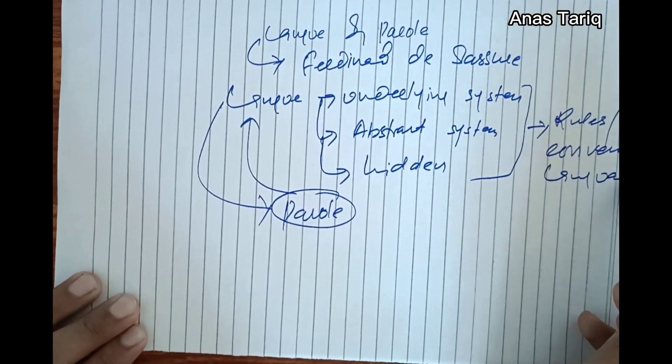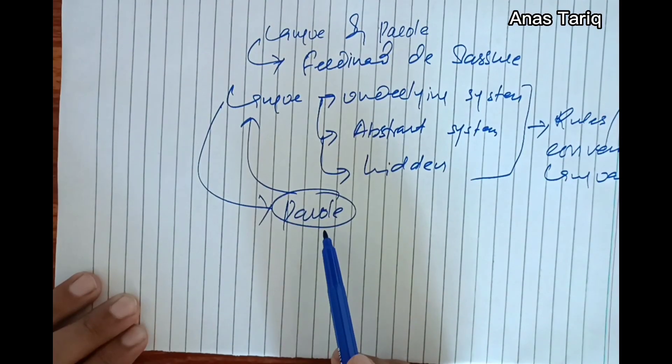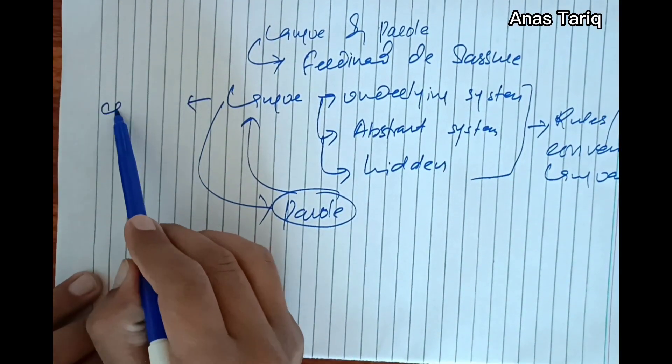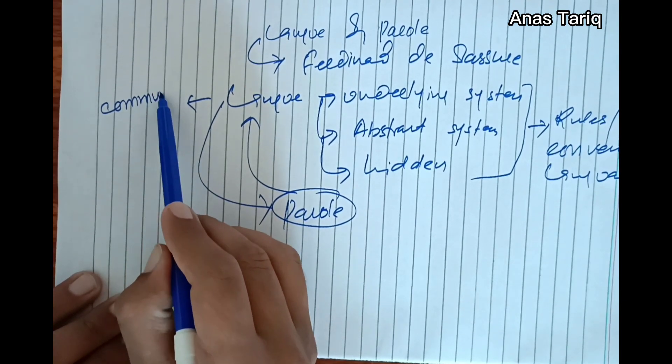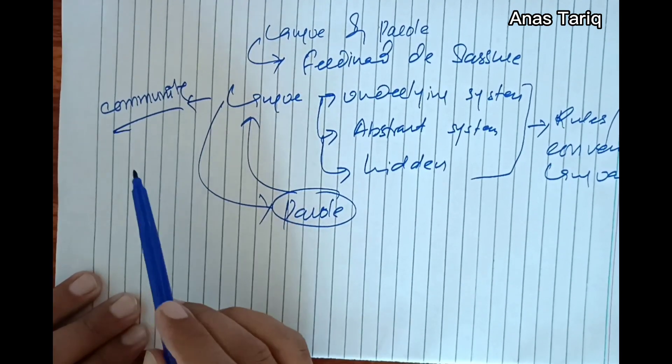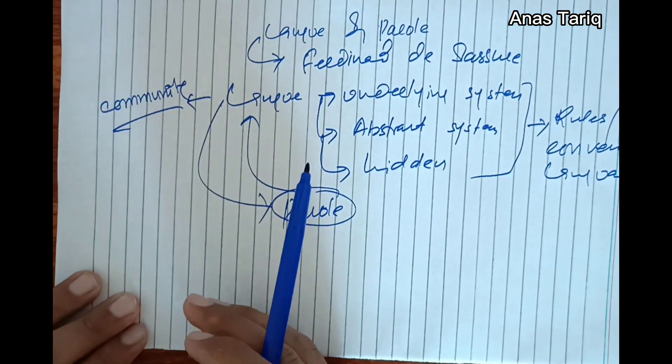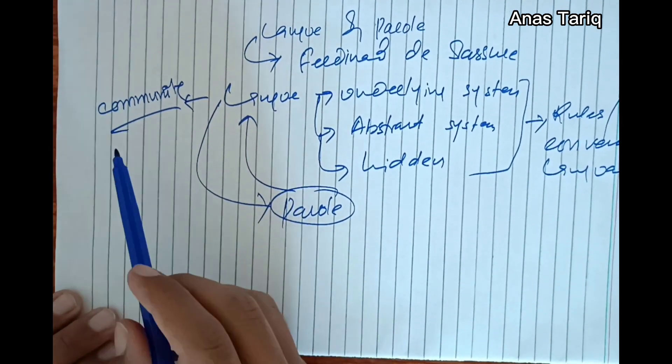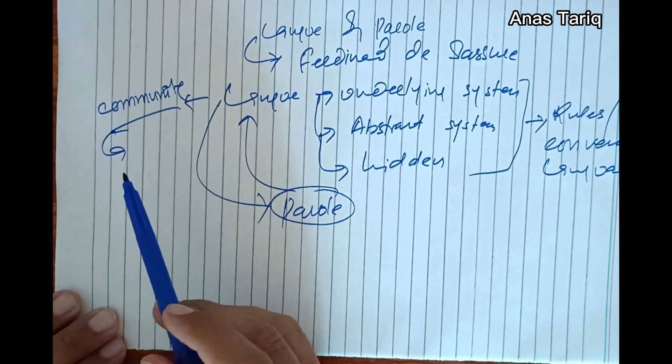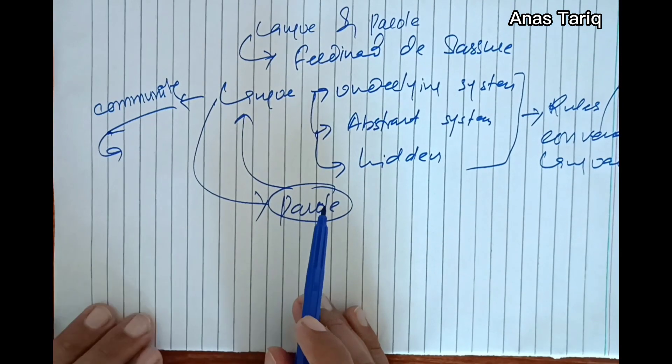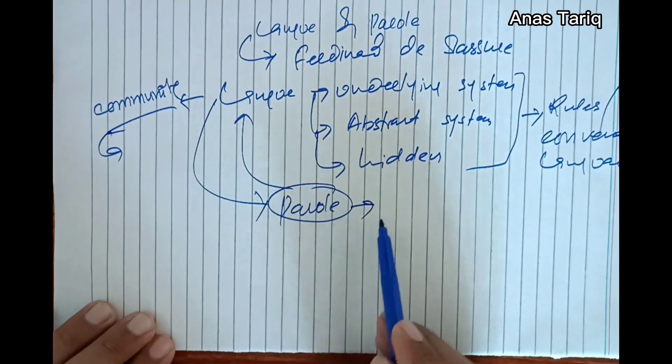This Langue is also shared by community. We see that the rules and regulations of a language are shared by community, and each community of a specific language use the same rules and regulations. Parole is a concrete system.